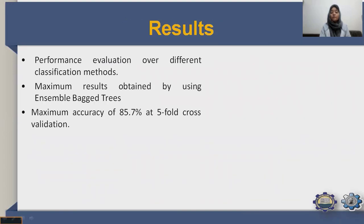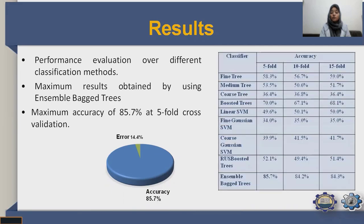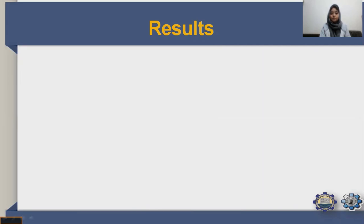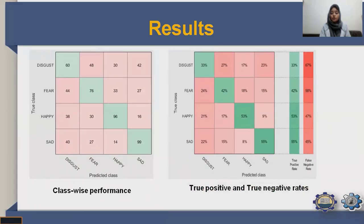Performance evaluation was conducted over different classification methods. Maximum results were obtained with ensemble bagged trees (EBT), achieving a maximum accuracy of 85.7% at 5-fold cross-validation with an error of 14.4%. The table shows different classifiers and their accuracies at 5-fold, 10-fold, and 15-fold cross-validation. Class-wise performance with true positive and true negative rate confusion matrices is also shown for disgust, fear, happy, and sad emotions.